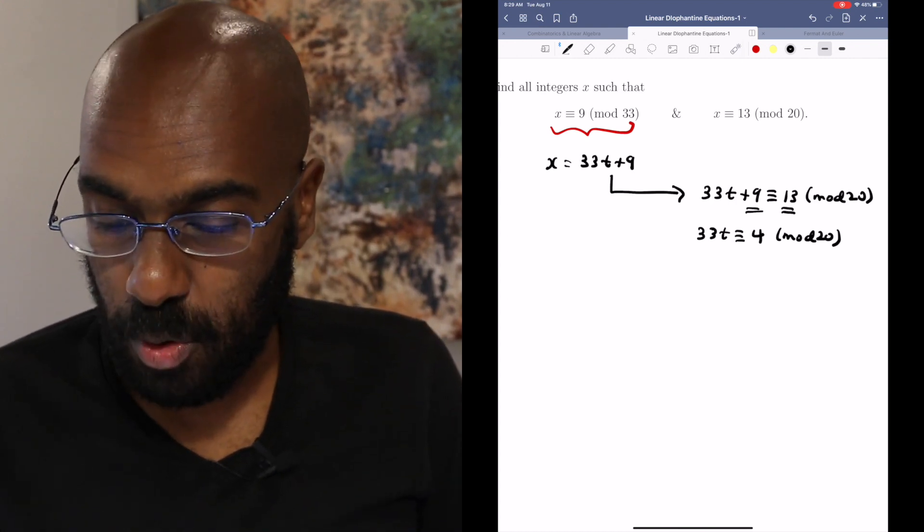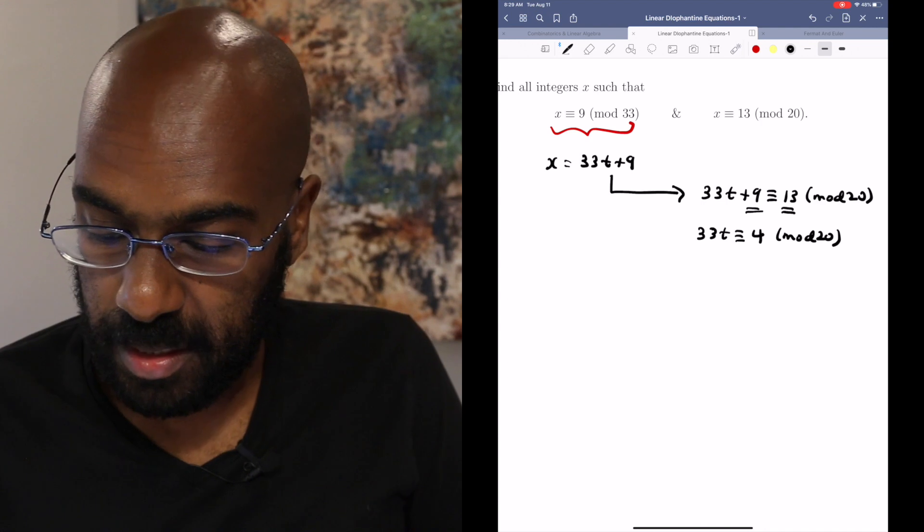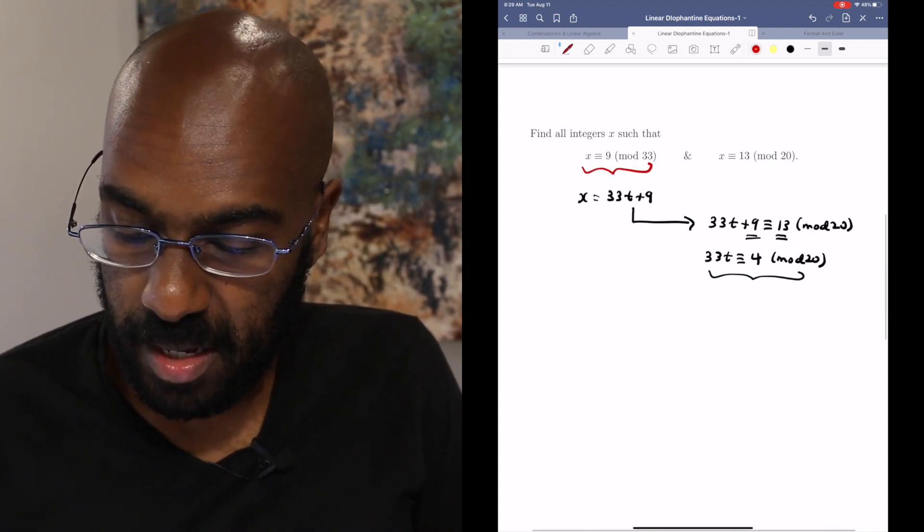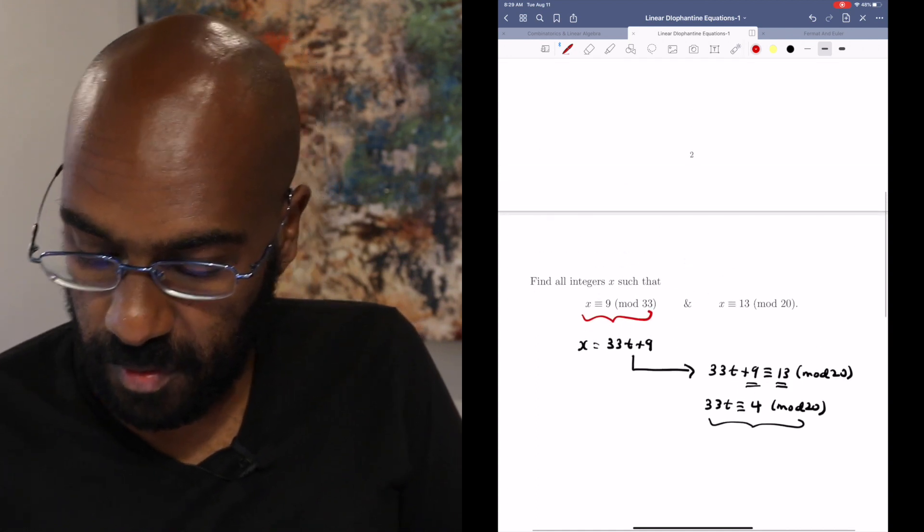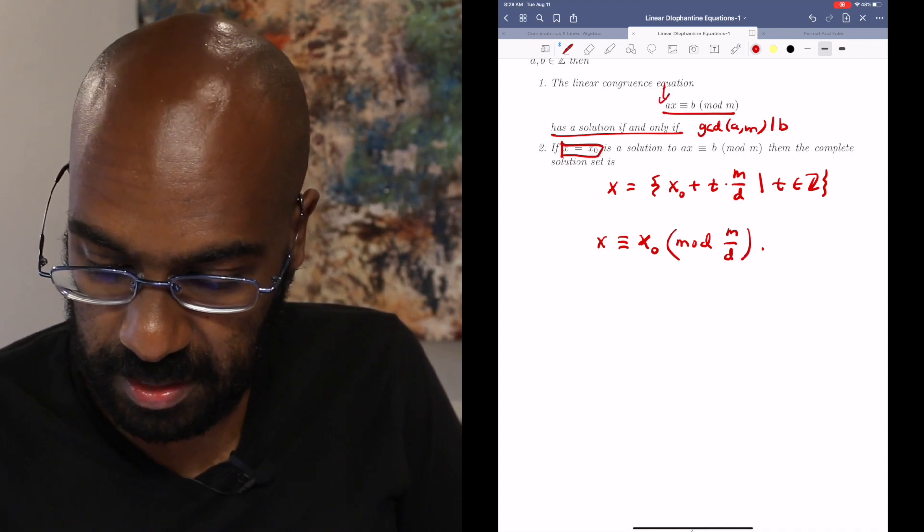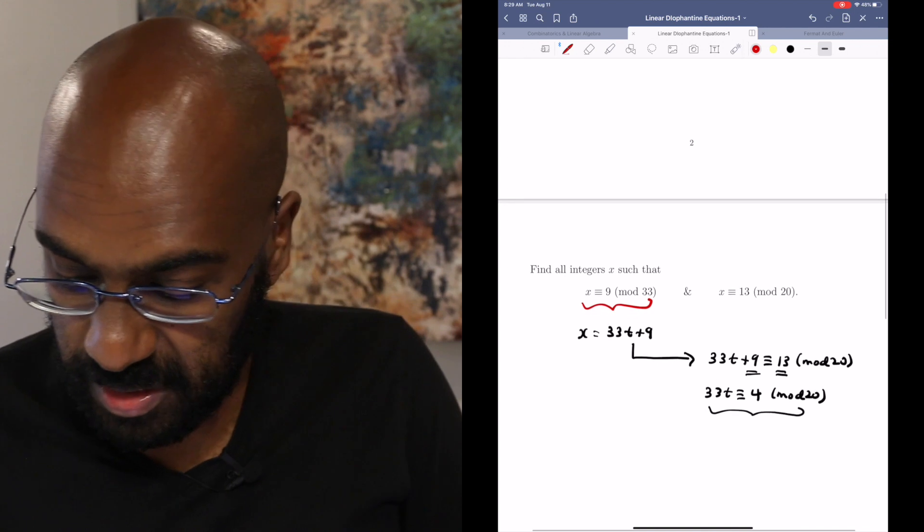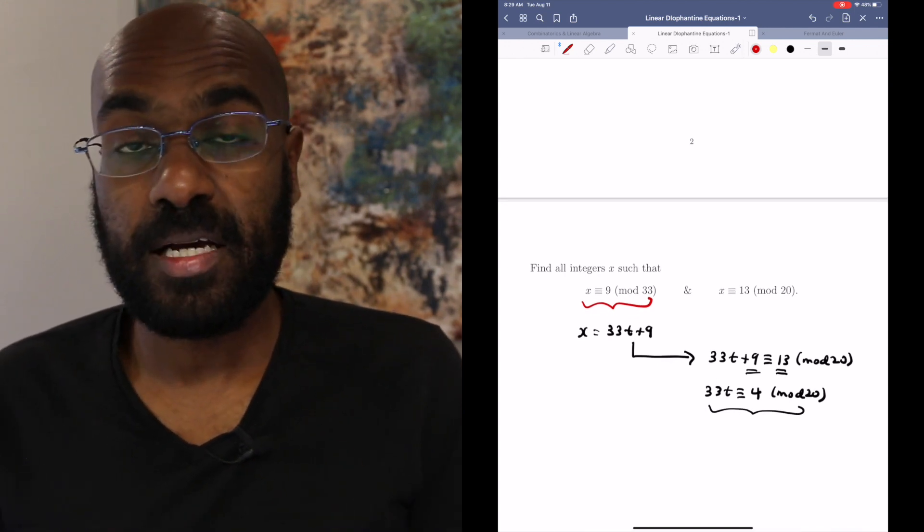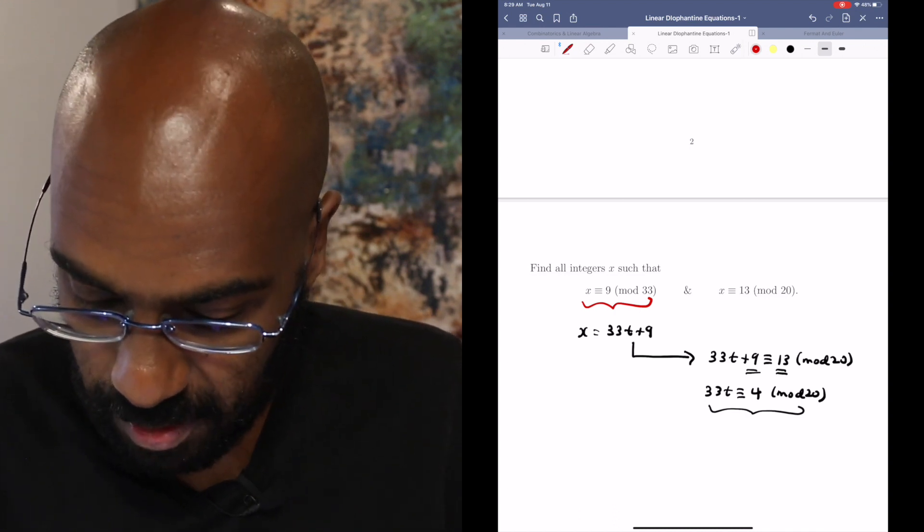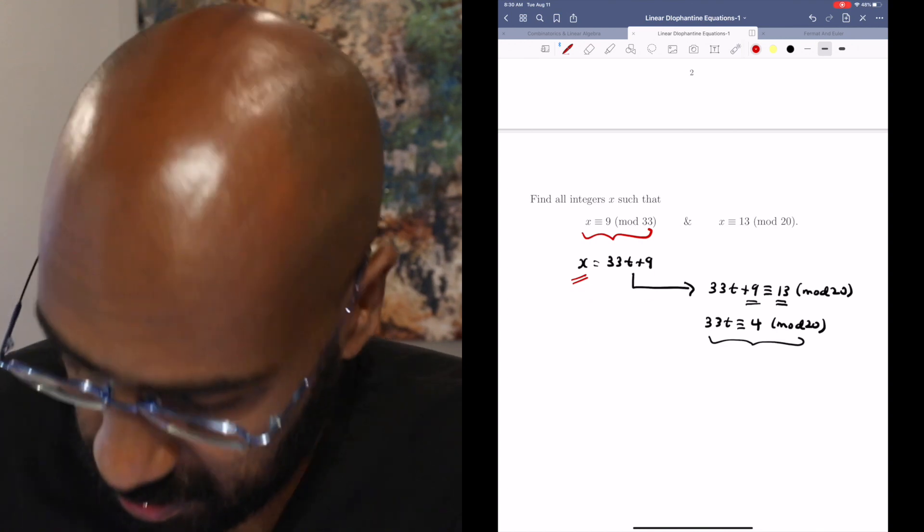we're in a perfect situation where we've now sort of reduced this to a linear congruence equation. By what we talked about above this thing, because in our case here a and m have a GCD of 1, this thing will have a solution for t modulo 20 and then we can substitute that back in for x to determine what x has to look like. So let's go ahead and actually solve this.